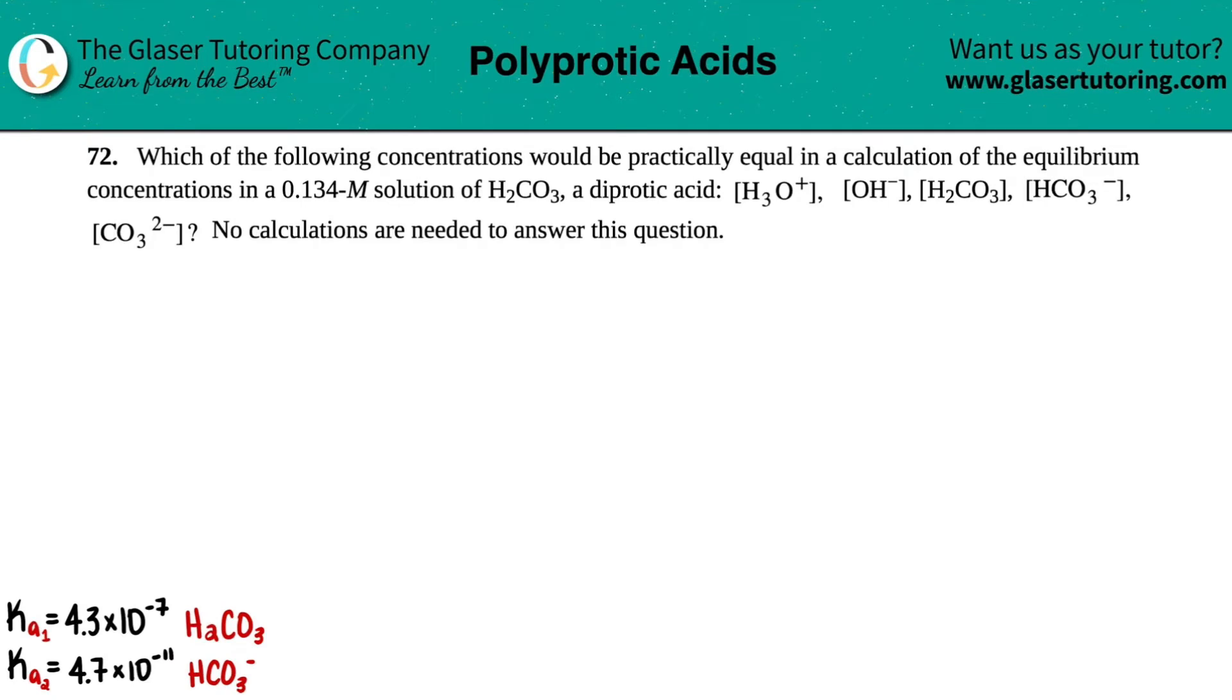Number 72. Which of the following concentrations would be practically equal in a calculation of the equilibrium concentrations in a 0.134 molar solution of H2CO3, a diprotic acid?